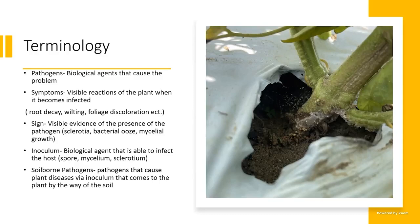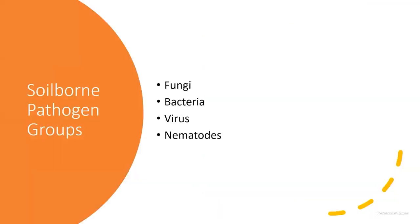Inoculum is the biological agent that is able to affect the host — whether it's spores, mycelium, or sclerotia — what's going to stay in that soil and infect future plantings. Soil-borne pathogens cause plant disease through contact with the soil.